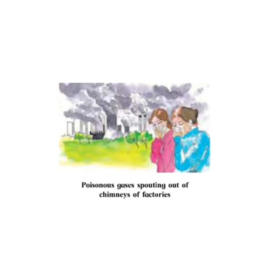Due to human intervention in nature, large-scale changes are taking place in the air, water and land. These non-living or abiotic components are getting polluted. As a result, the existence of living things is threatened, while several living things have already become extinct. If one factor of the environment is damaged, its relationship with other factors also gets affected and environmental balance is disturbed. Some living things on Earth have always become extinct over time.